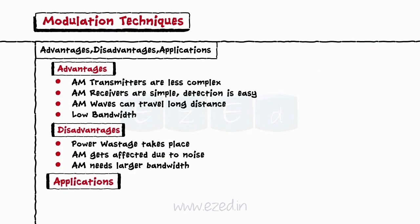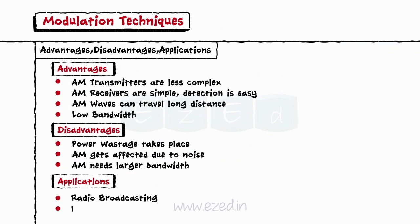Applications of AM include radio broadcasting and picture transmission in TV systems.